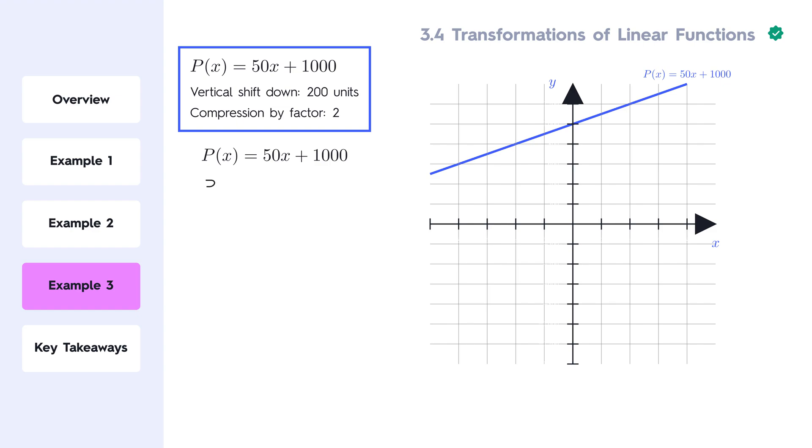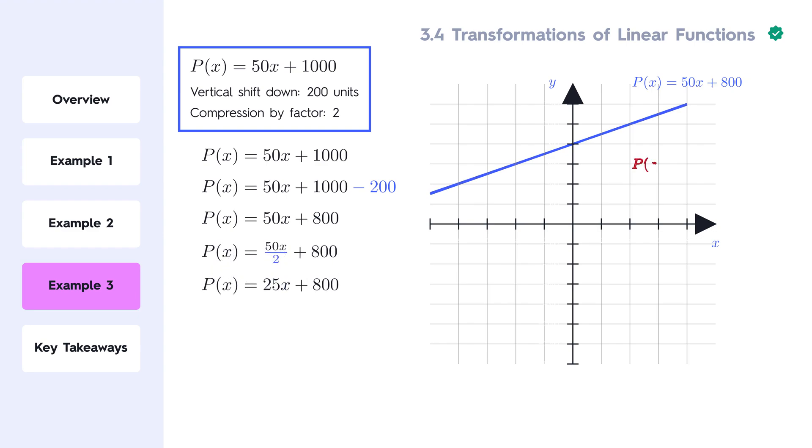We first apply the vertical shift by subtracting 200 from the constant term. Now, we compress the function by reducing the slope. A compression by a factor of 2 means we divide the slope 50 by 2, resulting in a new slope of 25.